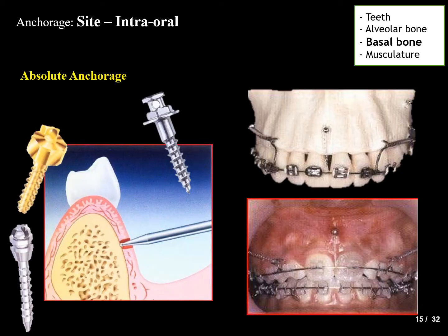Implants can aid in absolute anchorage. If an implant is placed at strategic positions in the upper or lower jaw, it can act as an absolute anchorage unit — resisting any unwanted movement and aiding the movement of teeth into desirable positions. Implants can be used alongside other anchorage types or as stand-alone absolute anchorage.